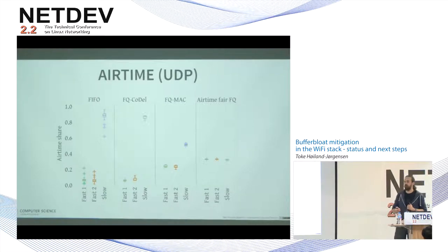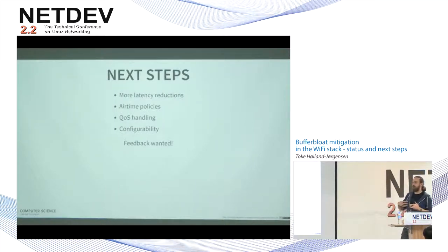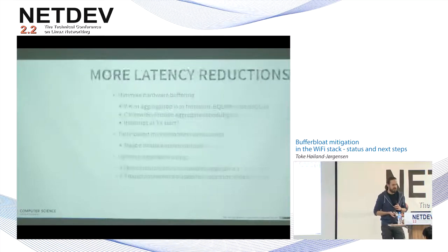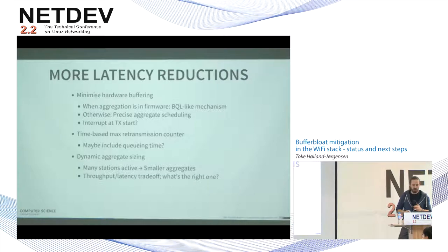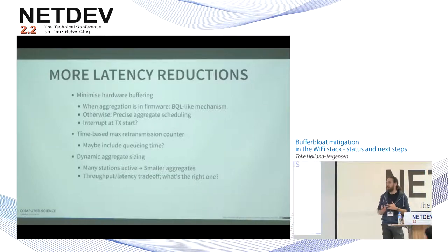That's what we did already. For next steps, we have ideas for further reducing the last 20 milliseconds of latency. One approach is minimizing buffering in the hardware. When we don't control aggregation in the driver — when that's done in firmware or hardware — the only thing we can do is minimize the number of packets we send down to the driver. BQL does this on Ethernet, and maybe we can adapt that to Wi-Fi as well; there have been some attempts but it doesn't quite work as well as we'd like yet.